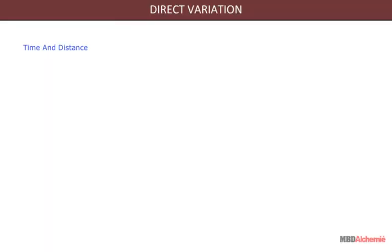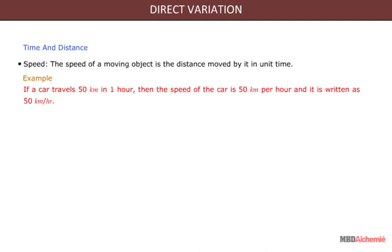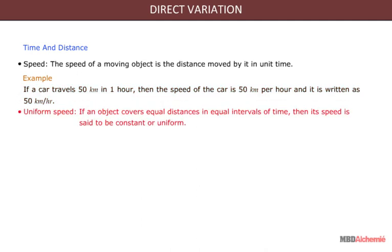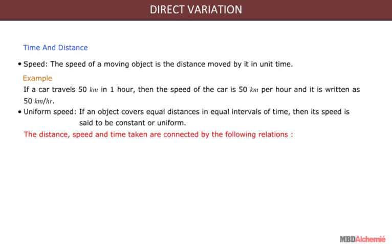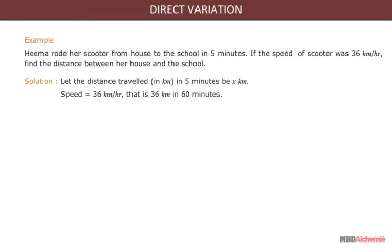Here we will learn about direct variation applied to time and distance. Speed: the speed of a moving object is the distance moved by it in unit time. For example, if a car travels 50 kilometers in one hour, then the speed of the car is 50 kilometers per hour. Uniform speed: if an object covers equal distance in equal intervals of time, its speed is constant or uniform. The key formulae are: Speed equals distance upon time; Distance equals speed multiplied by time; and Time equals distance upon speed.